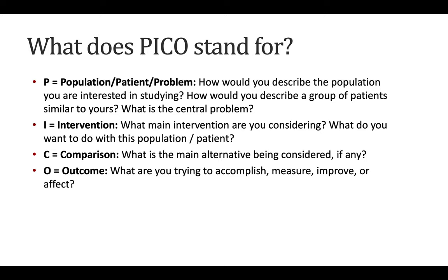PICO is an acronym. The P can stand for population, patient, or problem — to get you thinking about how you'd describe the population you're studying, perhaps by gender, race, class, or age, or what the central problem is. The I for intervention asks what main intervention you're considering with this population. The C stands for comparison — any alternatives to the initial intervention, often just comparing it to doing nothing.